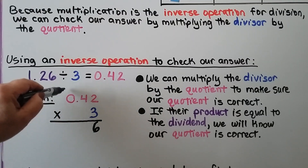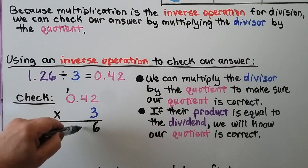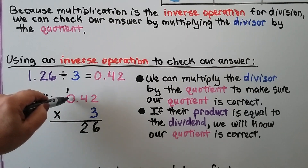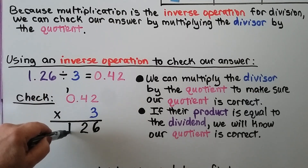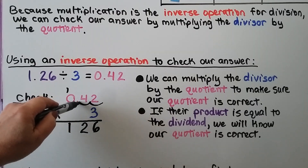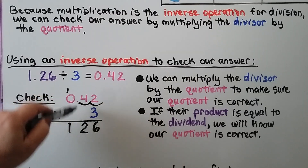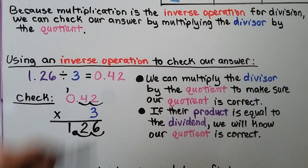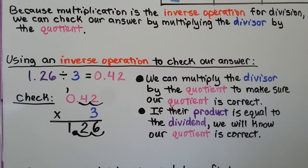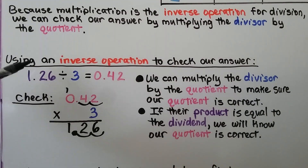Three times four is twelve — we regroup the one and put the two down. Three times zero is zero, plus one more is one. We count one, two hops in the factor, so there must be two hops in the product. The three is a whole number, it doesn't have any decimal places. We get one and twenty-six hundredths, which is what our dividend was, so we know we did it correctly — we have the right quotient.